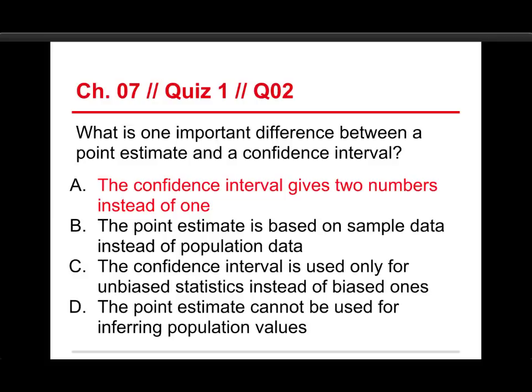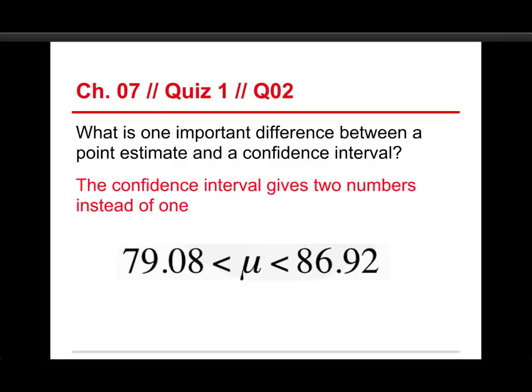And then this last idea, the point estimate cannot be used for inferring population values. Well, that's its purpose. That's exactly what it's made for. Anyhow, so let's take a look at A. This just gives you an example of a confidence interval. The thing we're estimating is right there in the middle. It's mu, the population mean. And you see that we have a lower bound for the estimate and an upper bound for the estimate. Those are based on our levels of confidence and the sample means and the standard error. But it's two numbers. A point estimate would be just the sample mean as a stand-in for the population mean.